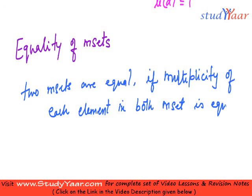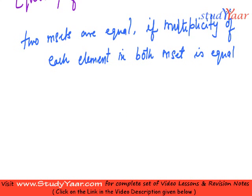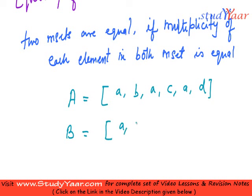So, let us see what is the meaning of this statement. Let us suppose that I have A as this: a, b, a, c, a and d. And I have B as this: a, b, a, a, c and d.